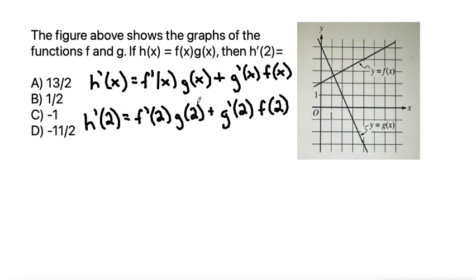So now how do we find each one of these pieces? Well f prime of 2 means the derivative of f when x is equal to 2. When x is equal to 2, f is a straight line. So the derivative is equal to the slope at any point, which is the slope of this line. At 2, if we find the slope of the line using rise over run, if we go up 1 and right 2, that would be a slope of positive 1 over 2. That's my f prime of 2.